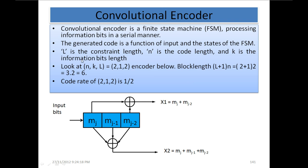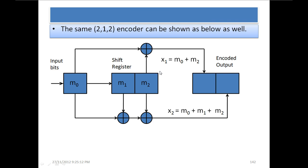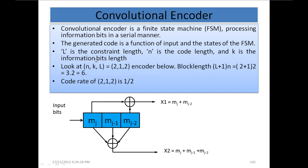Shift registers: L is the constraint length, N is the code length, and K is the information bits length. Consider an N, K, L = 2, 1, 2 encoder: the code length is 2, the information bits length is 1, and the constraint length is 2. The work length is L + 1 + N = 6, and the code rate is 1/2.